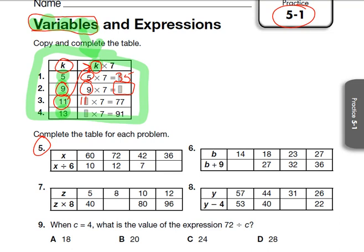So for number five, our variable is x, and the different numbers that they're giving us to plug in for x are 60, 72, 42, and 36.